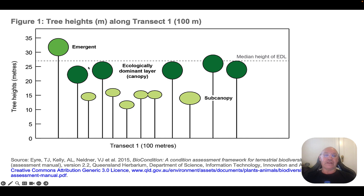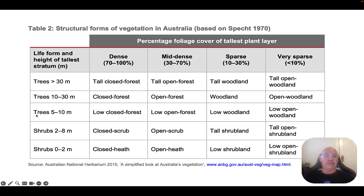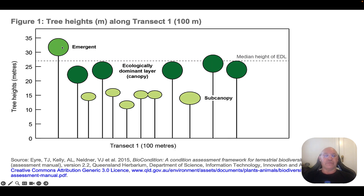So what is the most dominant layer? We can see it's the main canopy layer, with a median height of around 20 to 27 metres. Twenty-seven metres puts us into the category where the life form is trees and the height is between 10 to 30 metres. We can ignore the emergent layer because it's not the dominant layer.